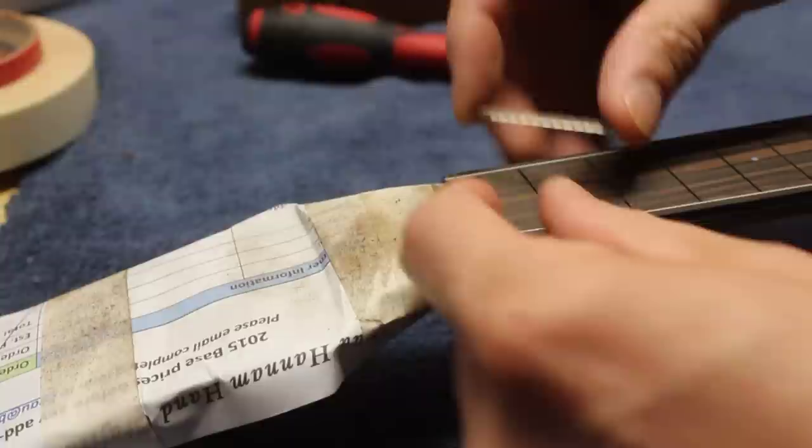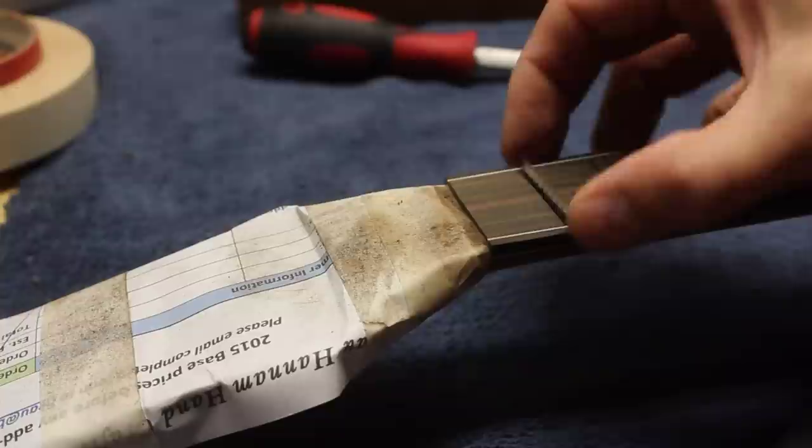And then I will do the same with the other end of the fret. And I'm just seating the tang, this tang length, to match the fret slot length, minus a little bit of length.